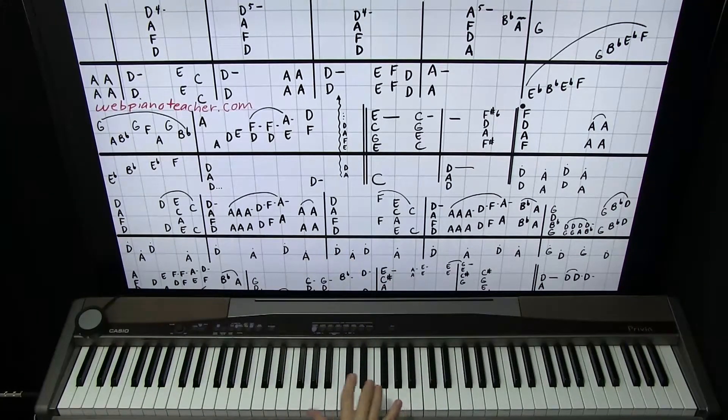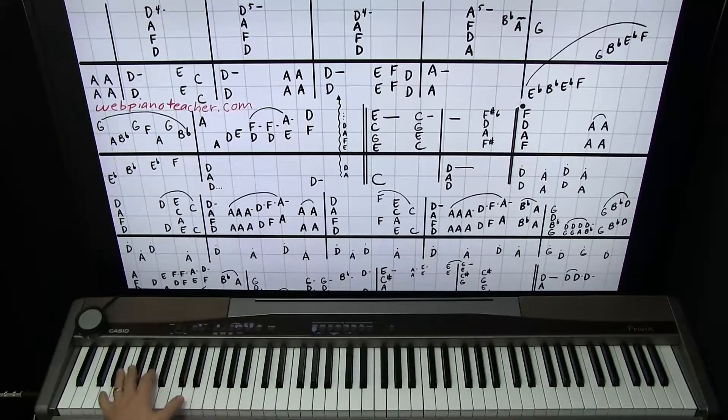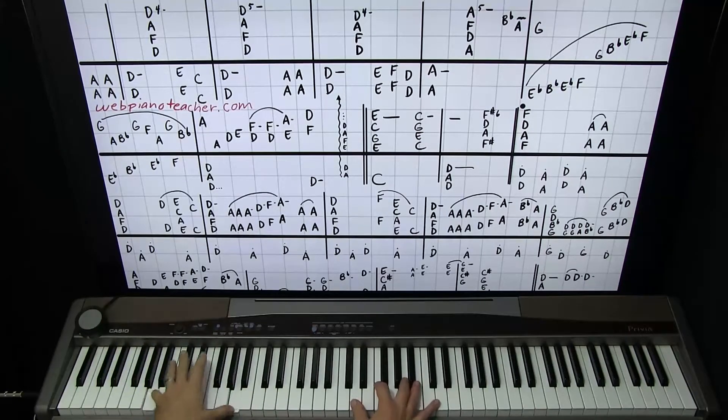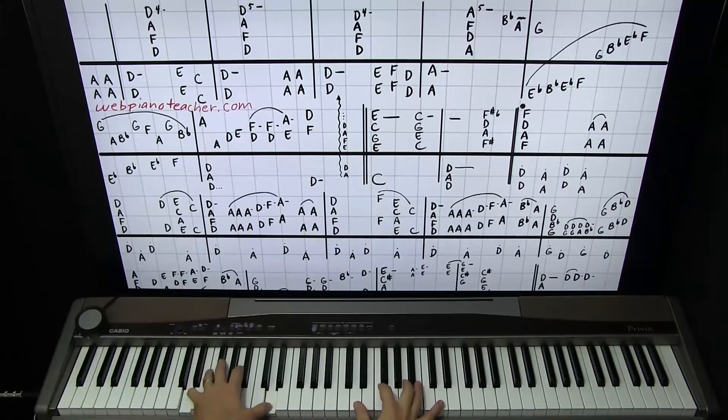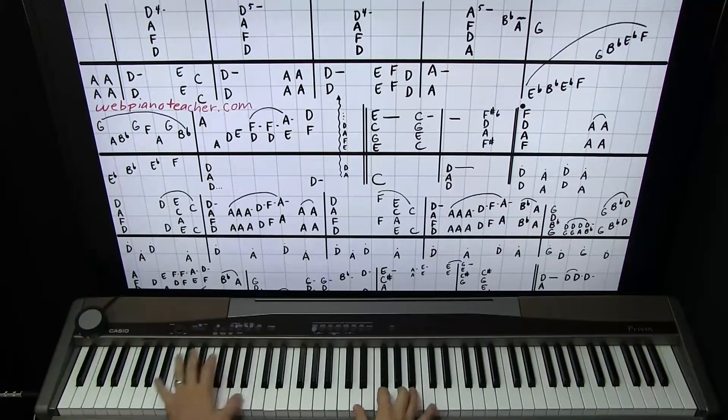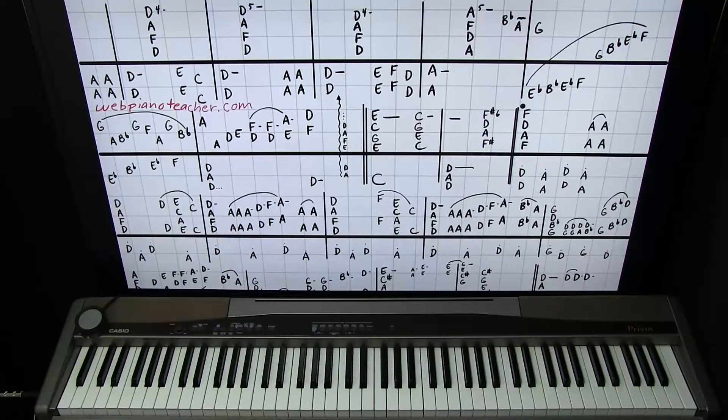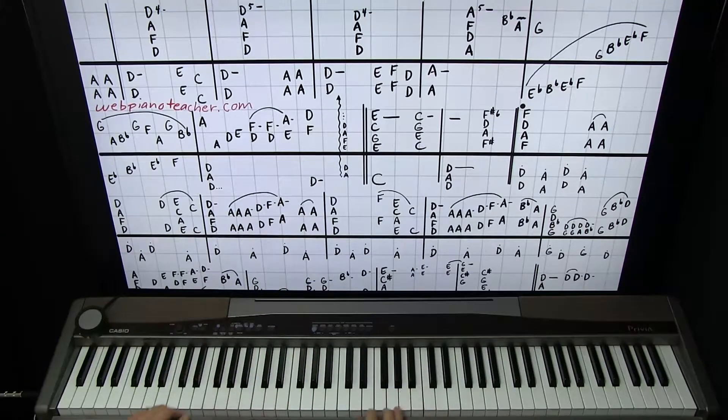Same thing, you can come down and do that, or you know what, you could also just stay in the octave you're in. We'll come down here lower, just give you that option. Now we're going to do like we did at the beginning: A, A, D, one, two, three, four again.